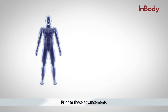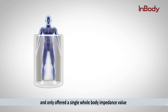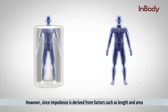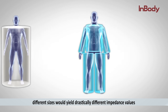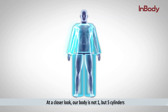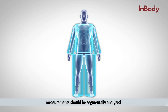Prior to these advancements, the conventional BIA method considered the human body as one cylinder and only offered a single whole body impedance value. However, since impedance is derived from factors such as length and area, different sizes yield drastically different impedance values. At a closer look, our body is not one but five cylinders with different lengths and widths, and therefore measurements should be segmentally analyzed.